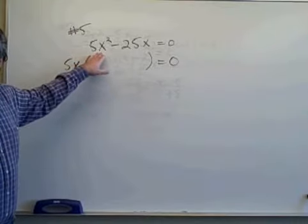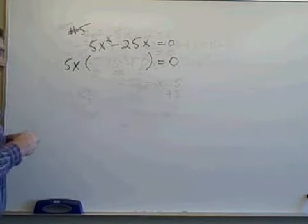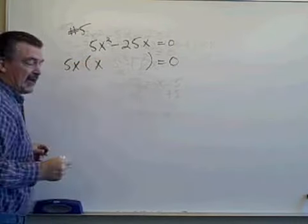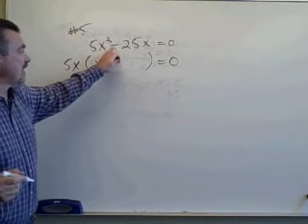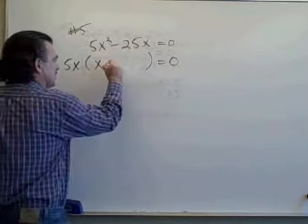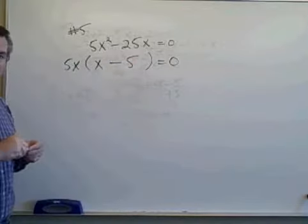When I divide 5x squared by 5x, that just leaves me x to the first power. When I divide minus 25x by 5x, that leaves me minus 5.